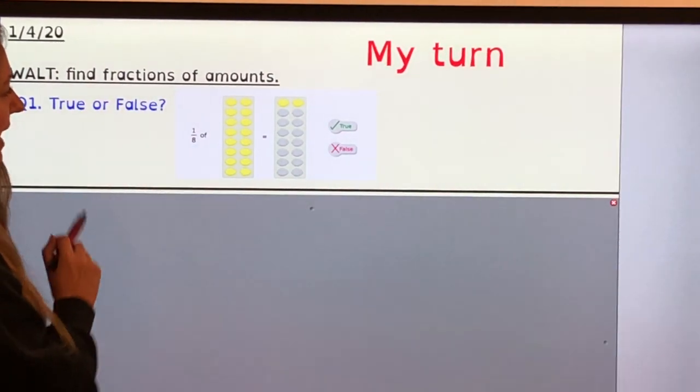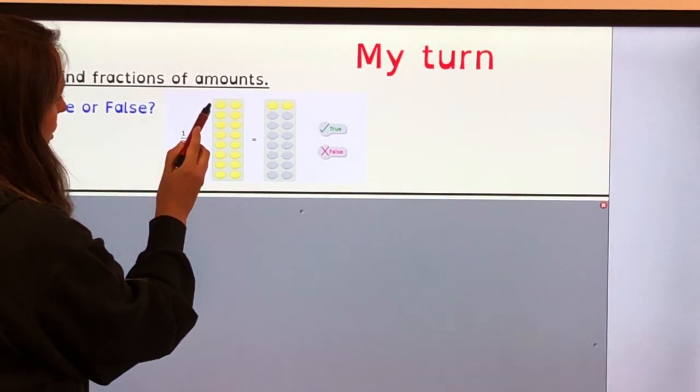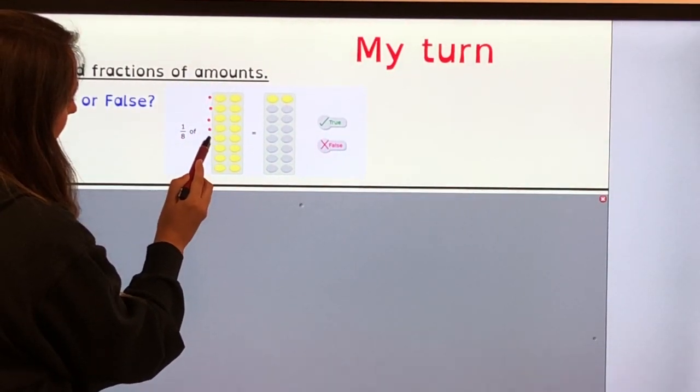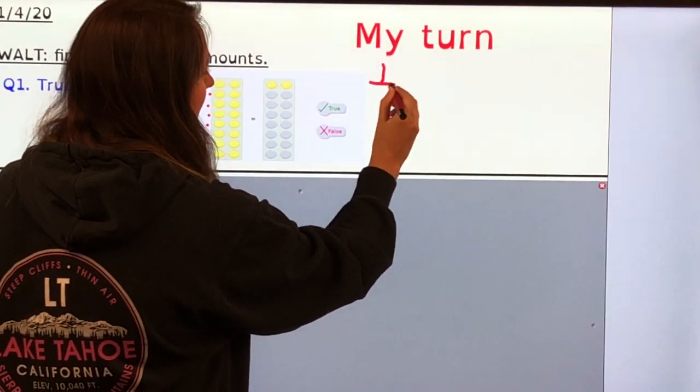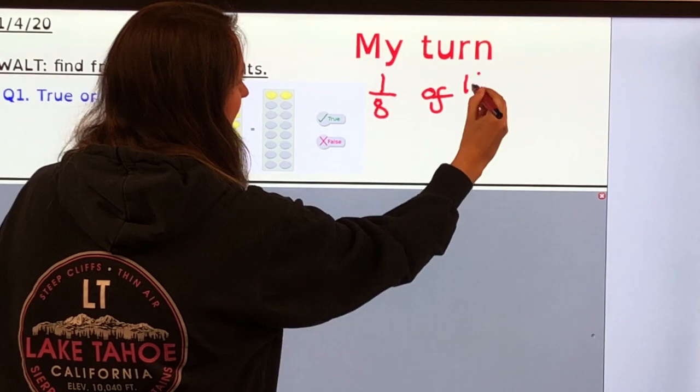The first thing we need to do is work out what the whole is. 2, 4, 6, 8, 10, 12, 14, 16. So I'm trying to find one-eighth of 16.